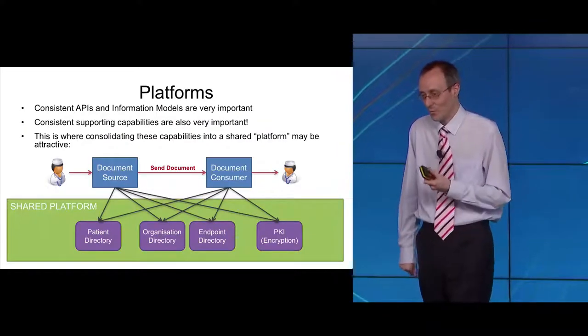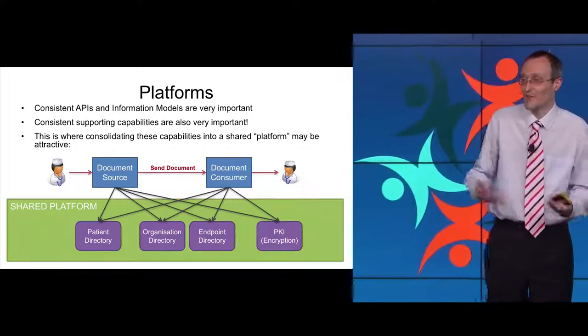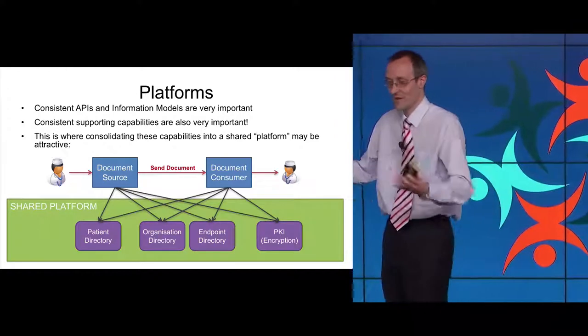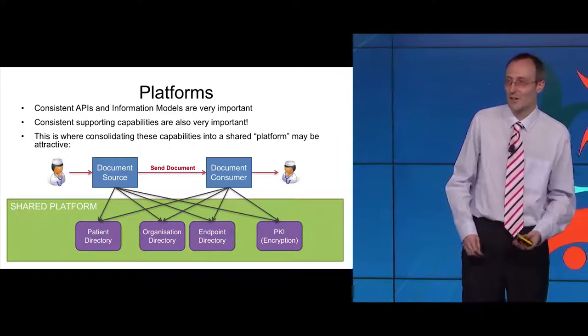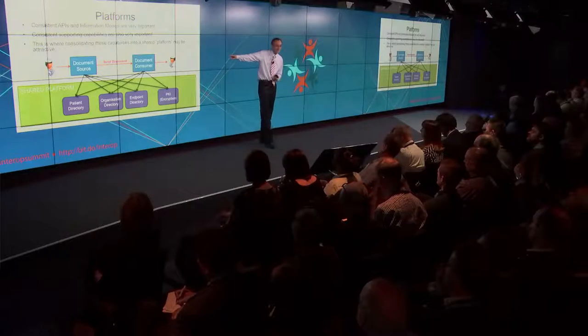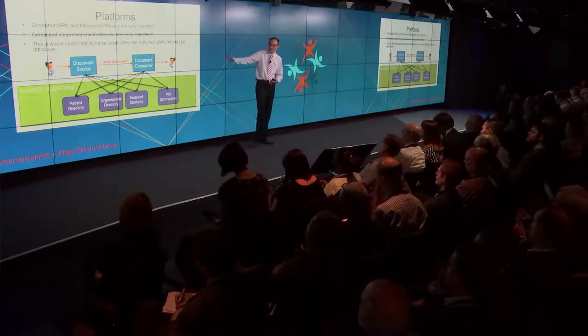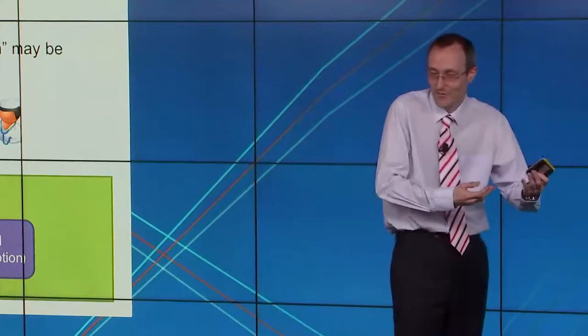Finally, platforms. One way of ensuring a consistent approach to those capabilities is to use some kind of common platform to provide them for you. For example, within a particular area you might have a consistent single place where everyone is authenticated — a single user directory for all users in your area. To take a concrete example: if I want to send a discharge summary from a hospital to a GP, I need to consistently identify the patient — hopefully using PDS — identify the organisation I'm sending to, locate the endpoint to send it to, and encrypt it. You could use a single platform — national, regional, or local — depending on the scale of the sharing you need to do for the particular problem you're trying to solve.